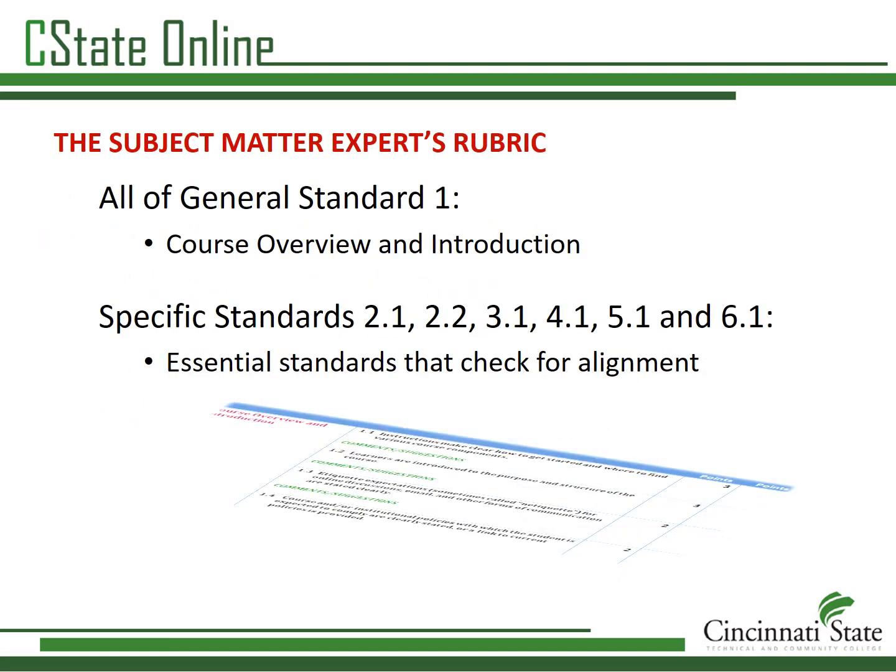You are only asked to review 15 of the specific review standards, but they are very important. Those are standards 1.1 through 1.9 and 2.1, 2.2, 3.1, 4.1, 5.1, and 6.1. For guidance in how each standard should be reviewed, QM publishes annotations to go with the rubric. You will find the annotations you need on pages 4 through 7 of your packet.